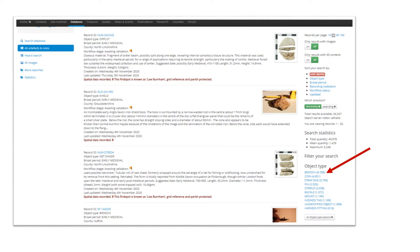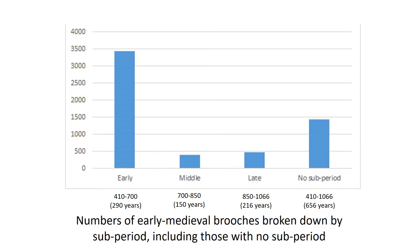Brooches are the most common early medieval find on the PAS database, with about 20% of all early medieval objects being brooches — there are more brooches than coins for this period. The overwhelming majority of brooches are from the early part of the period. The main reason is that the early Anglo-Saxon period is the age of furnished graves, with people being buried fully dressed. We'll start with a little on dating and who's wearing the brooches.